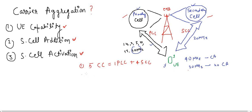Another important point is that the primary cell is responsible for all signaling. Responsibilities related to signaling — such as RRC and NAS — are all handled by the primary cell.